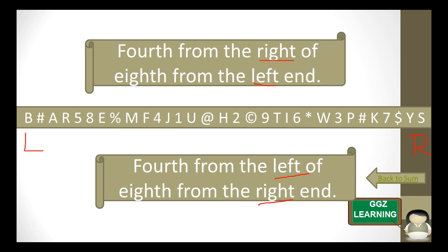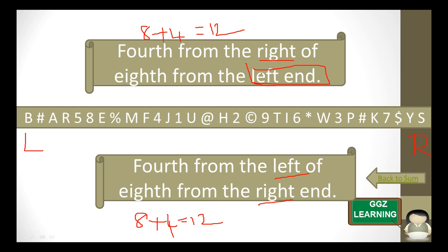For this model, we are going to add both the numbers. So 8 plus 4 equals 12. Same here — the direction we go depends on what the last given reference is. Here they have given the left end, so we find the 12th position from the left end: 1st, 2nd, 3rd, 4th, 5th, 6th, 7th, 8th, 9th, 10th, 11th, and 12th. So 1 is the answer for this question.